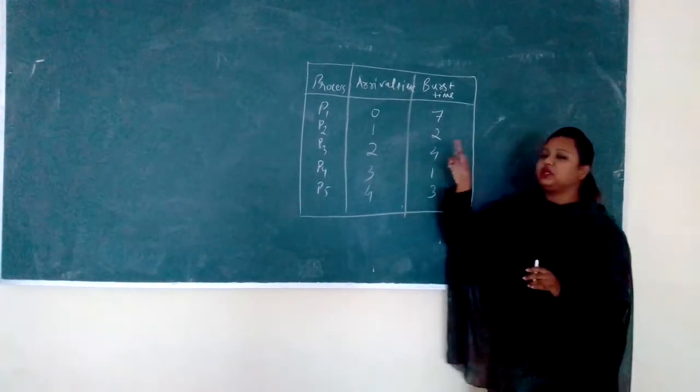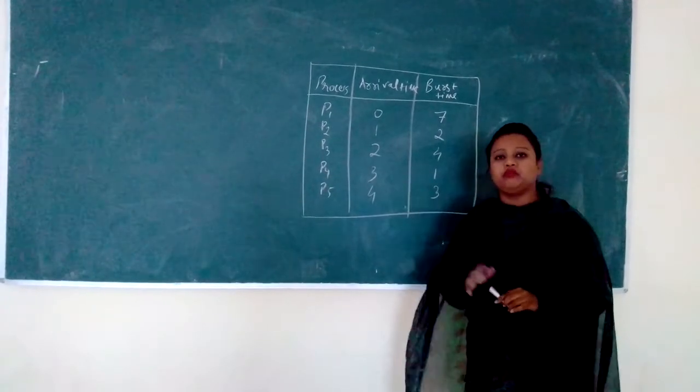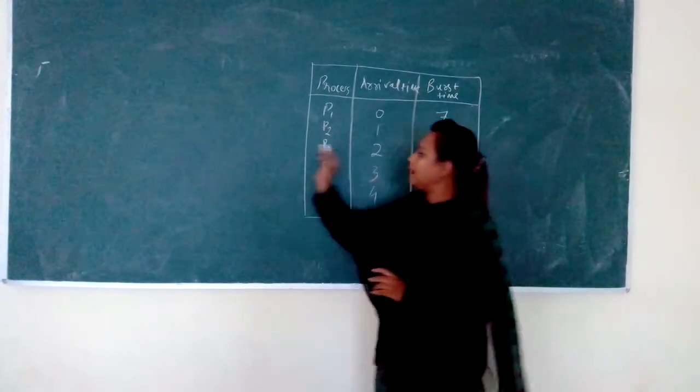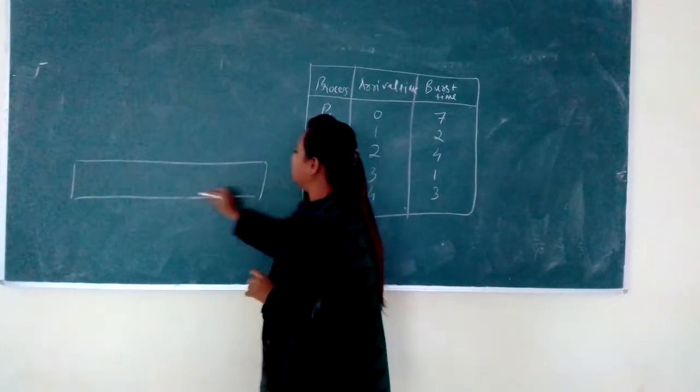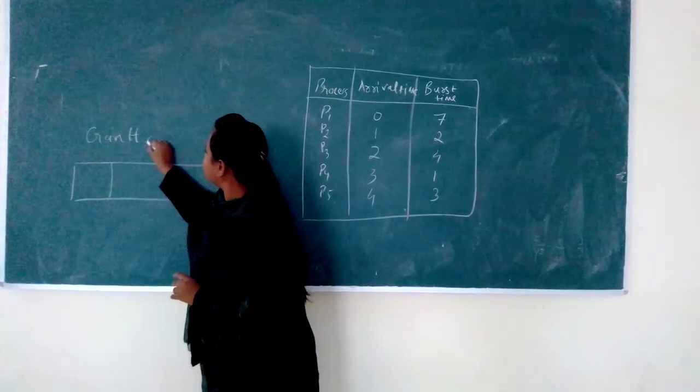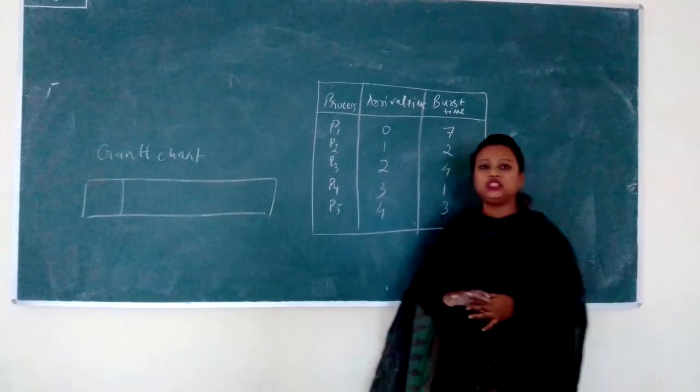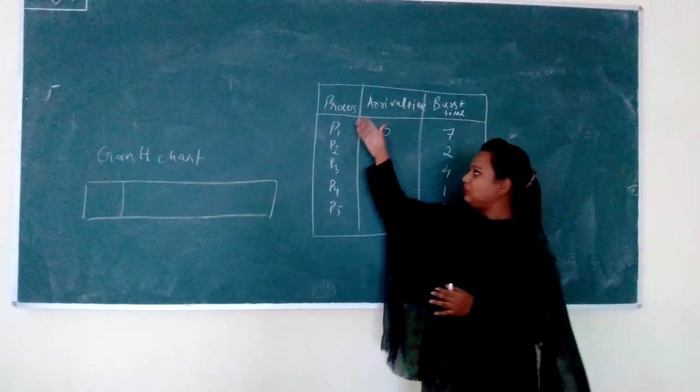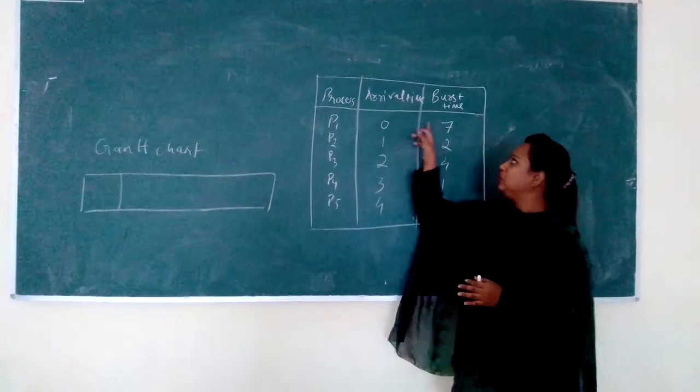Now, as we are solving this particular question for non-preemptive case, the Gantt chart will be formed as follows. What happens here when we are making the Gantt chart?